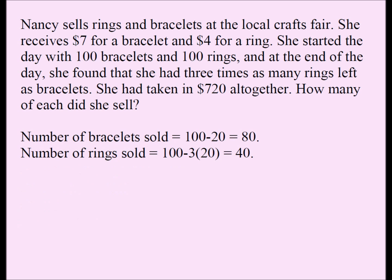From the first solution slide, we had the expressions 100 minus X and 100 minus 3X. All I need to do is replace X with 20, because we know X is 20, and that gives me the number of bracelets she sold, which is 100 minus 20 equals 80. And if you replace X with 20 in the second expression, you get 100 minus 3 times 20, which is 60. So 100 minus 60 is 40. That's your answer.